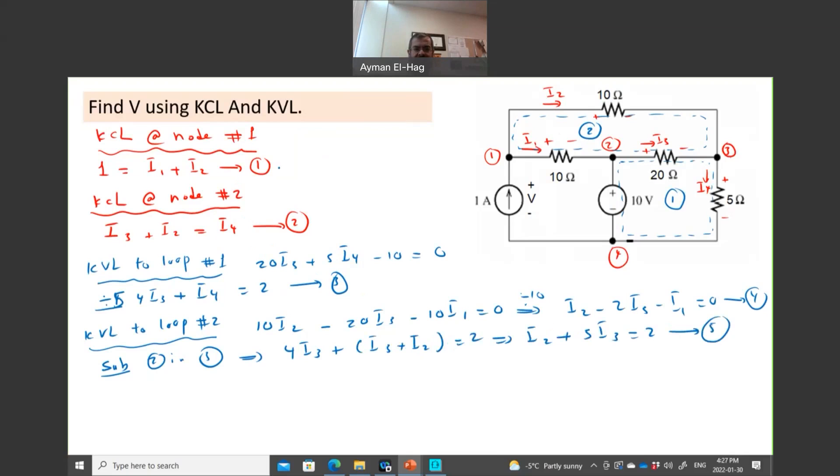I will substitute 2 and 3. So we will have 4I3 plus I4. I4 is equal to what? I3 plus I2. Equal to 2. So we will have I2 plus 4 plus 1, plus 5I3 equal to 2. This equation is number 5. So now I will have this equation in terms of I1, I2, and I will have also this equation number 4 in terms of 1, 2, and 3. And number 5: 2 and 3. There is no 1 here. So we have 3 equations with 3 unknowns.